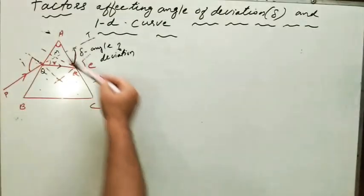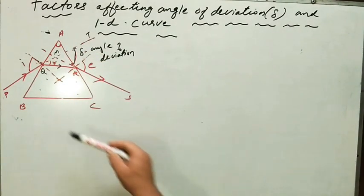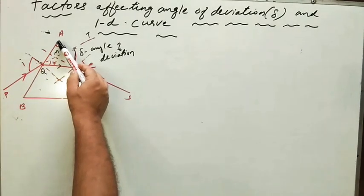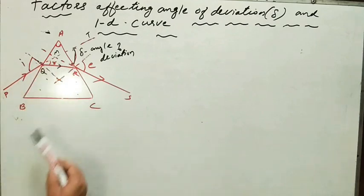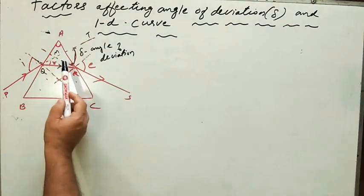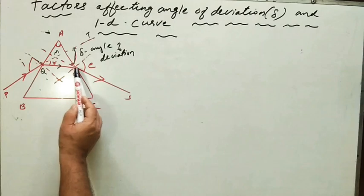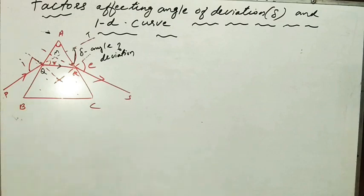As you can see on the board, ABC is the principal section of a glass prism. AB and AC are the two refracting surfaces inclined to each other. PQ is the incident ray falling at surface AB. Since it is traveling from air to glass, it bends towards the normal, and the refracted ray QR bends towards the base of the prism. When it strikes surface AC and emerges from a denser to a rarer medium, it bends away from the normal, but the emergent ray again bends further towards the base. So whenever refraction takes place through a glass prism, both the refracted ray and emergent ray bend towards the base.